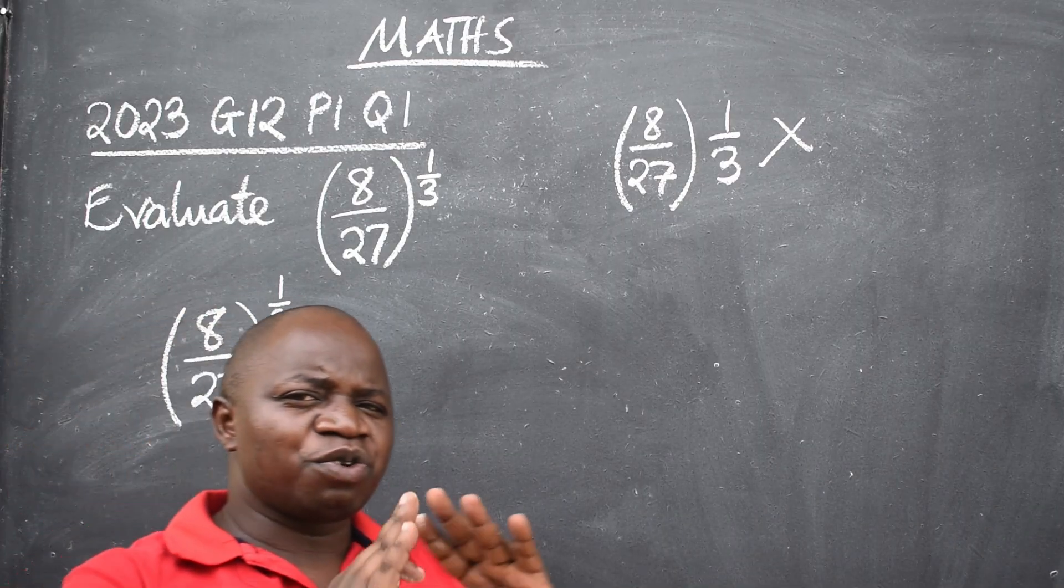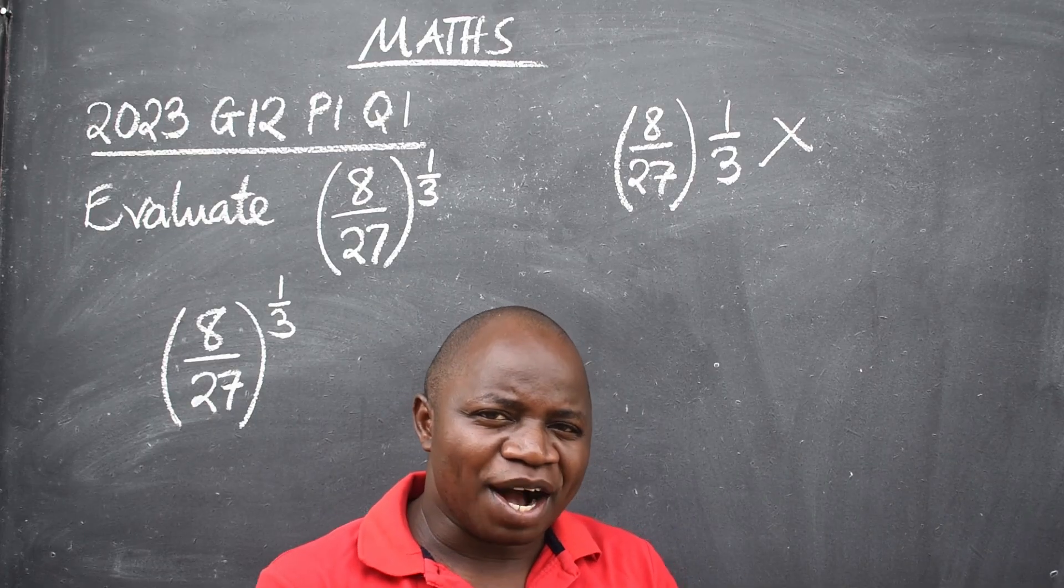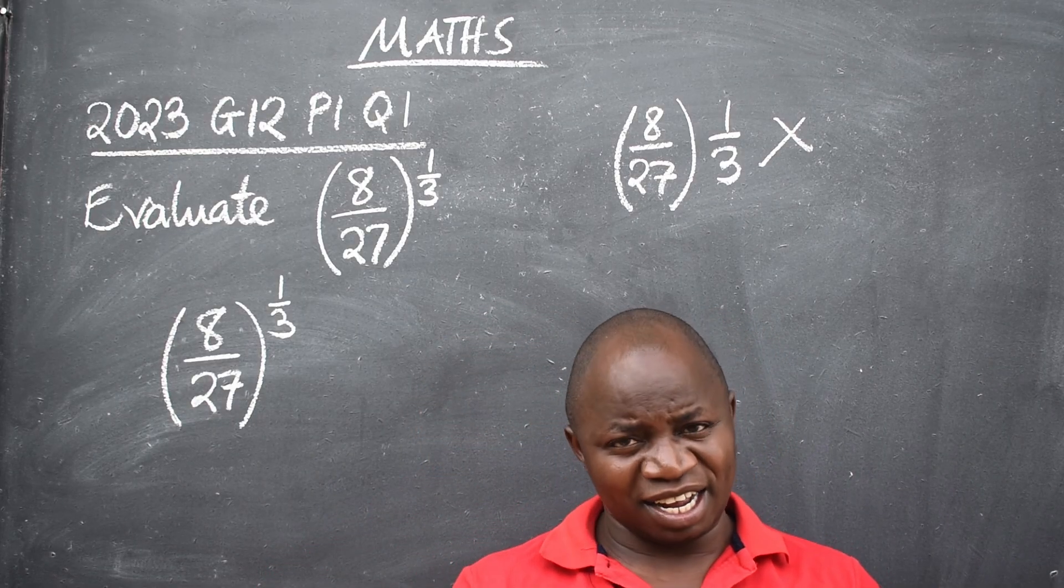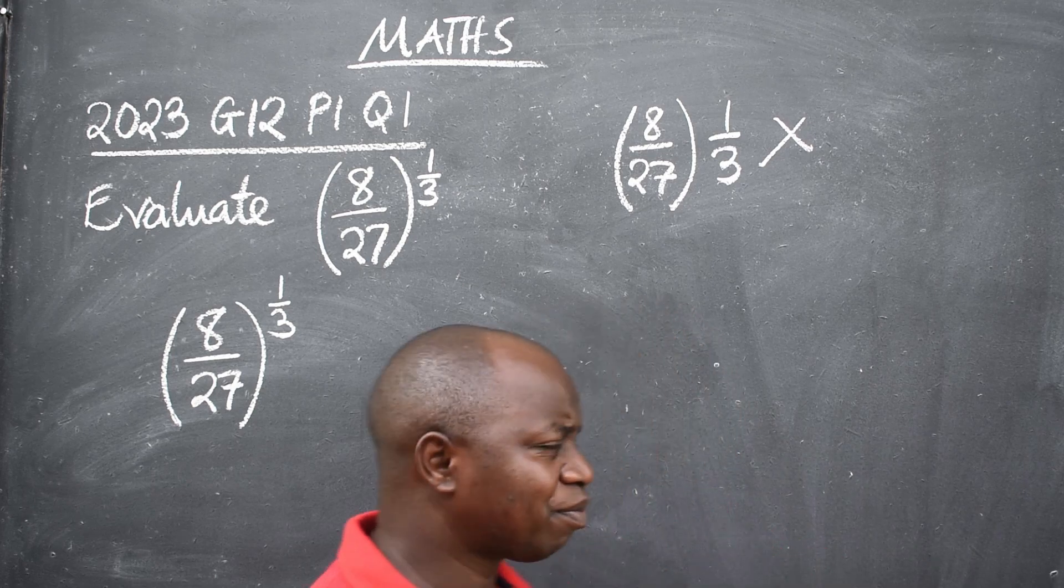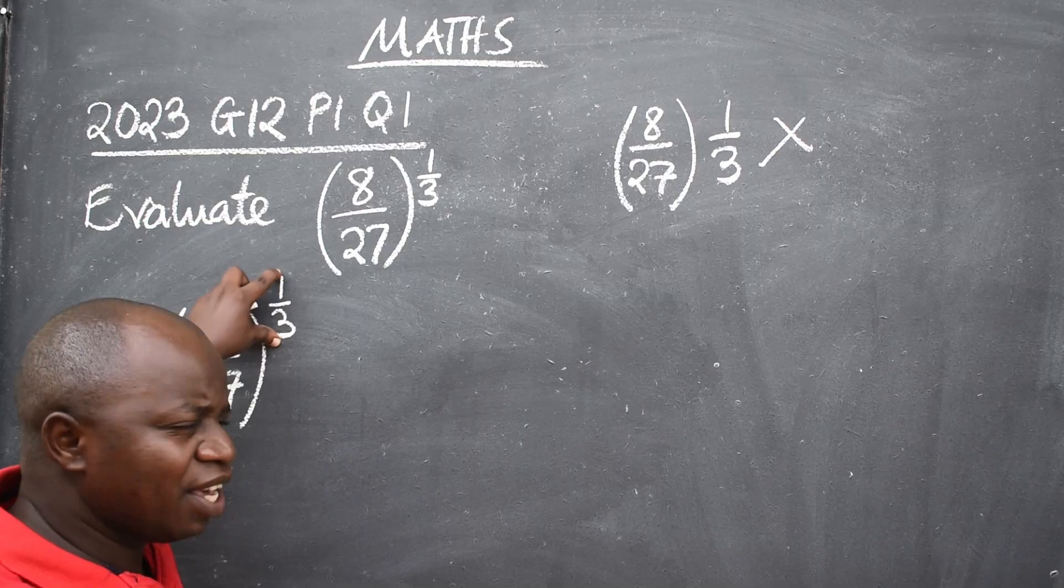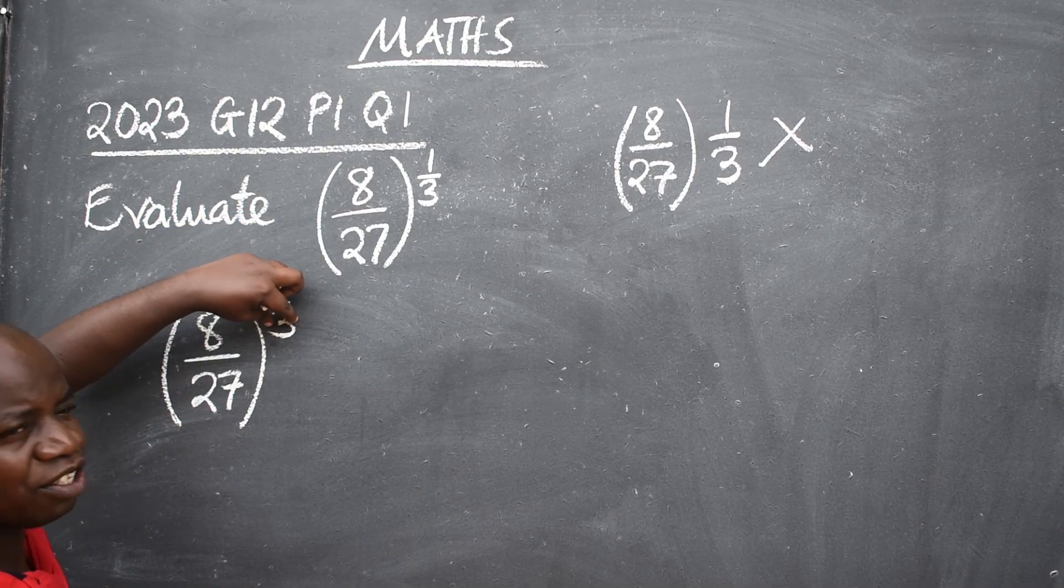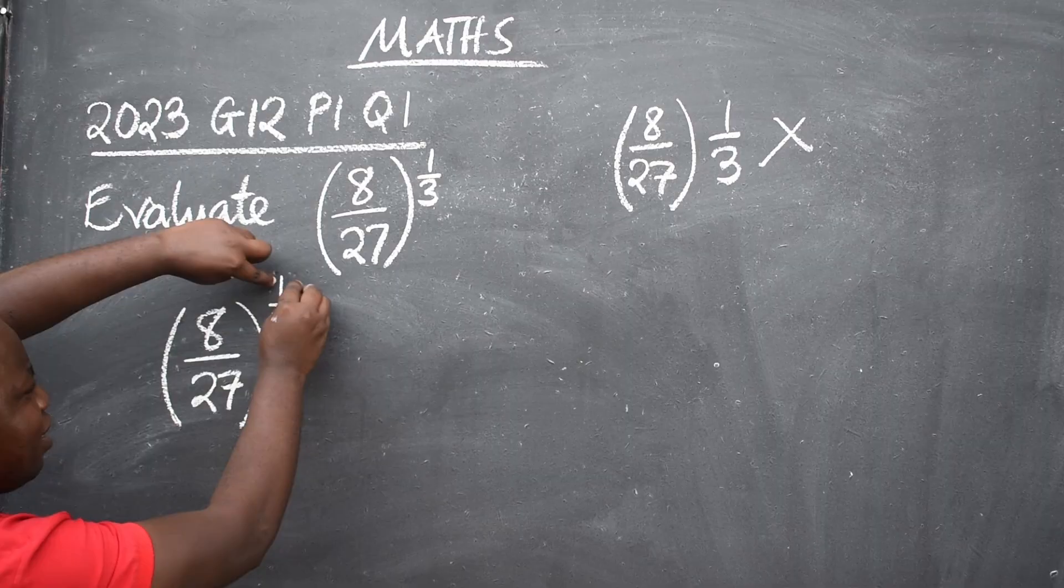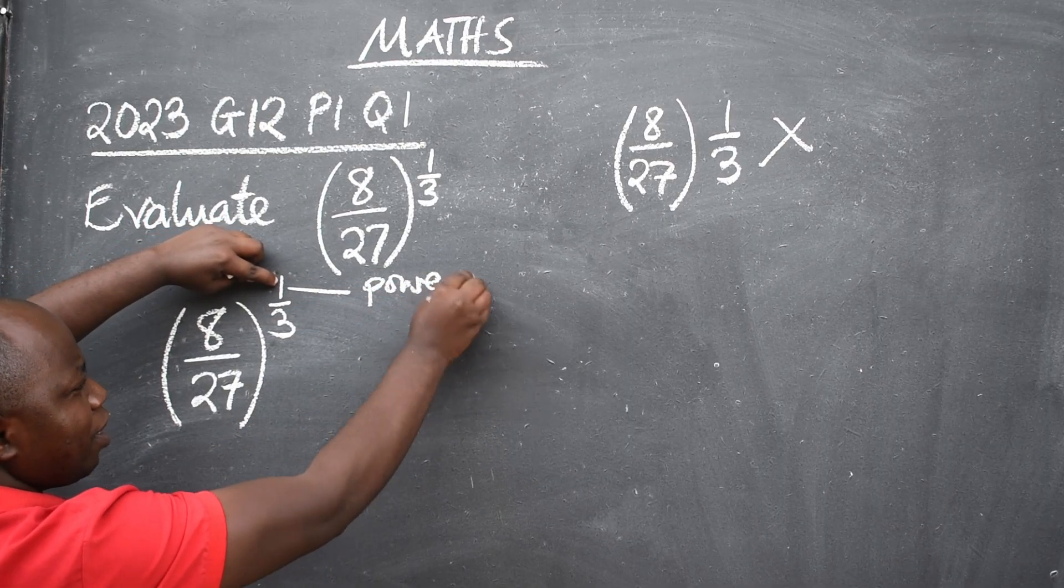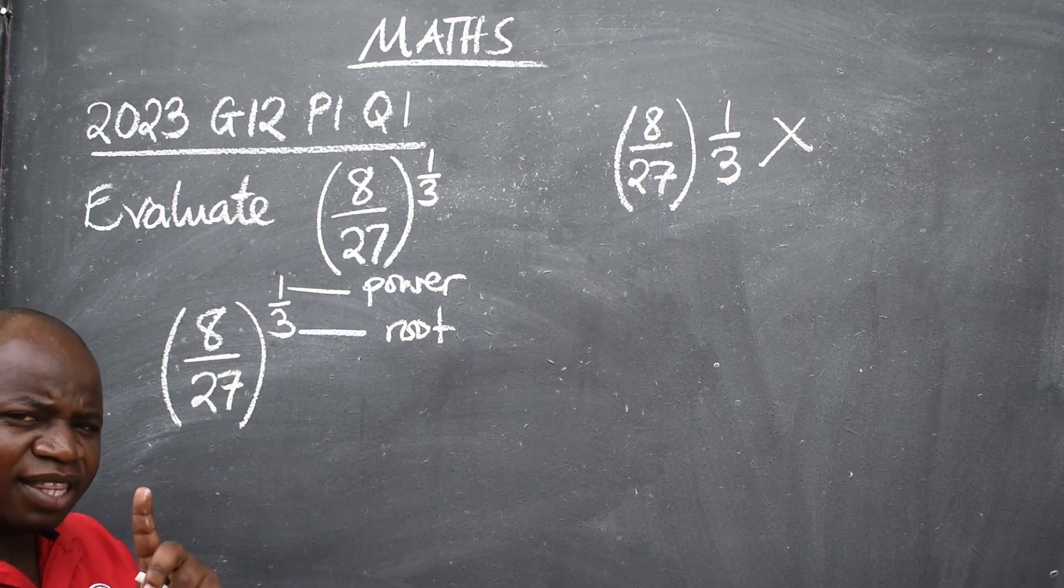Look at the question. You are told to find the exact value. Now the power that has been given is a fraction without a negative. If you are given a fraction as a power the numerator has a meaning, denominator has got also a meaning. This numerator is called power. Then this one is root. That's the first principle.